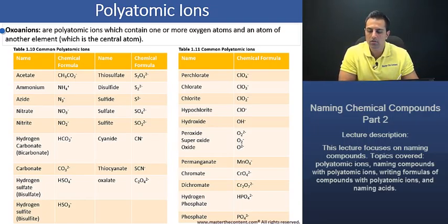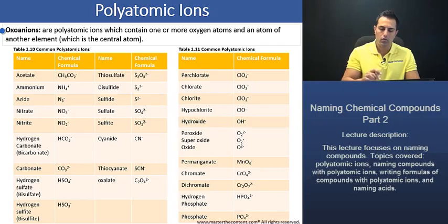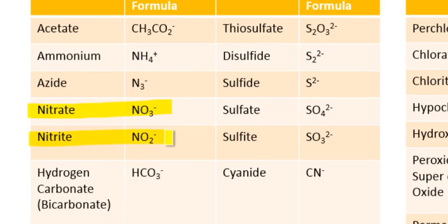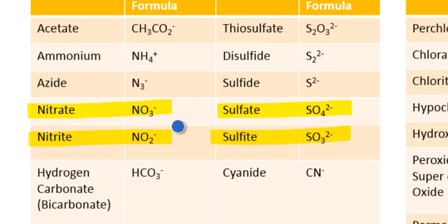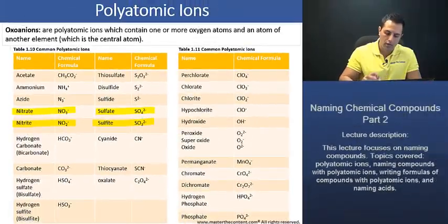Oxal anions are polyatomic ions which contain one or more oxygen atoms and an atom of another element, which is the central atom. When we have two oxal anions in a series — as we see here for nitrate and nitrite, and sulfate and sulfite — note that the ITE ending is given to the polyatomic ion with fewer oxygens. The ATE ending is given to the polyatomic ion with more oxygens, as we see here.